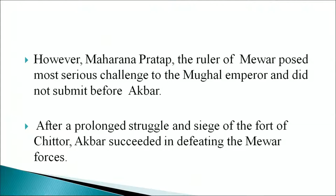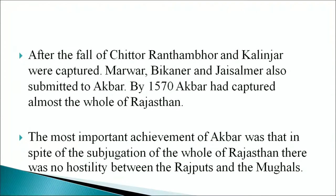However, Maharana Pratap, the ruler of Mewar, posed the most serious challenge to the Mughal emperor and did not submit before Akbar. After a prolonged struggle and siege of the fort of Chittorgarh, Akbar succeeded in defeating the Mewar forces. After the fall of Chittorgarh, Ranthambore and Kalinjar were captured. Marwar, Bikaner, and Jaisalmer also submitted to Akbar. By 1570, Akbar had captured almost the whole of Rajasthan. The most important achievement was that, despite subjugating the whole of Rajasthan, there was no hostility between the Rajputs and the Mughals.